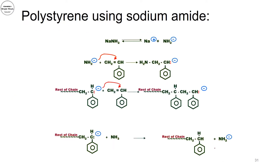Looking at polystyrene — the formation of polystyrene is through anionic polymerization. Here we use sodium amide, which provides NH2 minus. This anion attacks the double bond of styrene; the double bond breaks and the amide forms a bond with one carbon of the double bond, while the other carbon becomes the carbon anion. The carbon anion then attacks another styrene monomer, and this continues in the growing chain step until the presence of something like ammonia or traces of ammonia in solution terminates the chain.